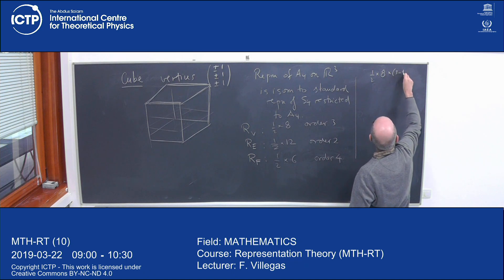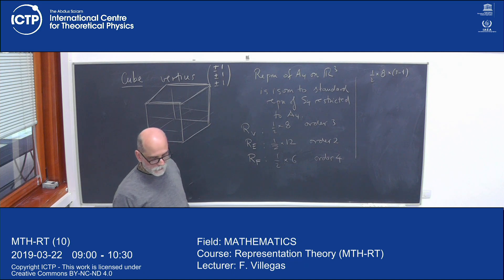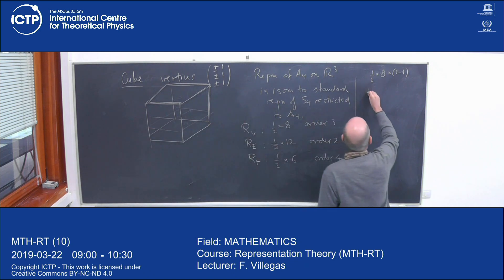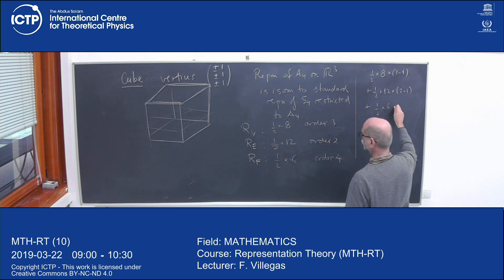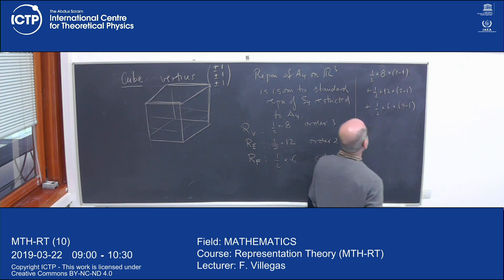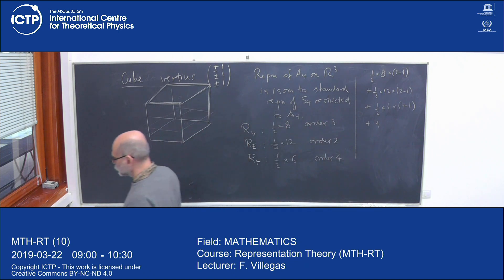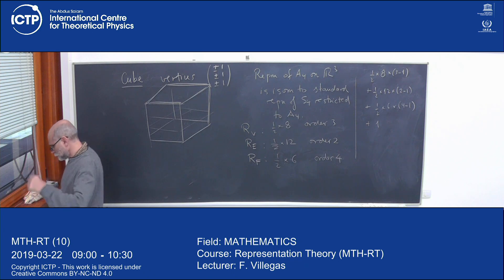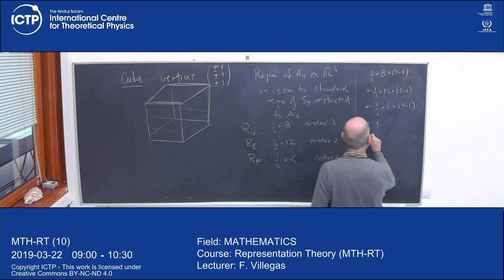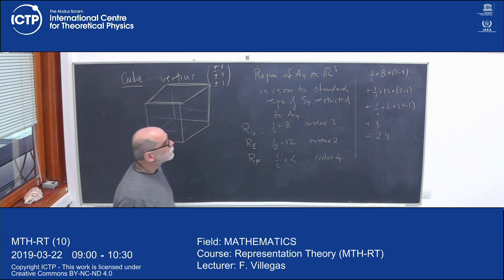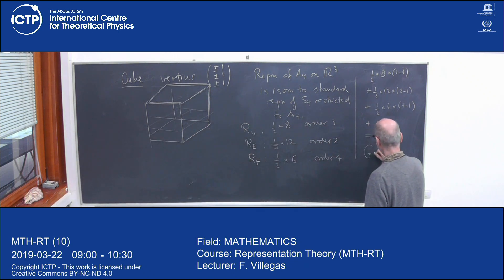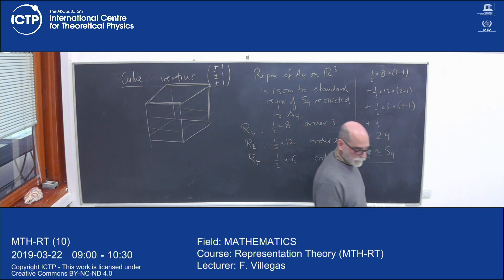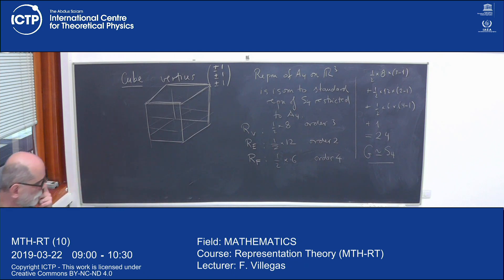Let's count: (1/2)×8×(3-1) for vertices, plus (1/2)×12×(2-1) for edges, plus (1/2)×6×(4-1) for faces, plus the identity. This should come out to 24. So the claim is that G is isomorphic to S4. Then we need to figure out what representation it gives.